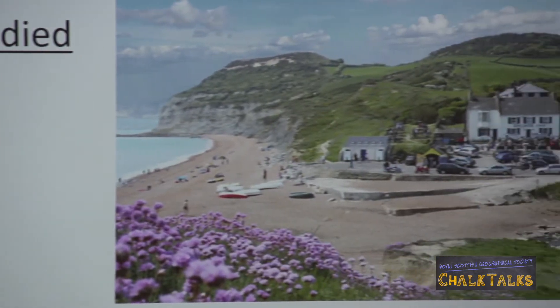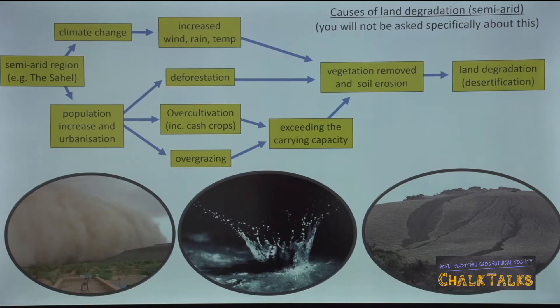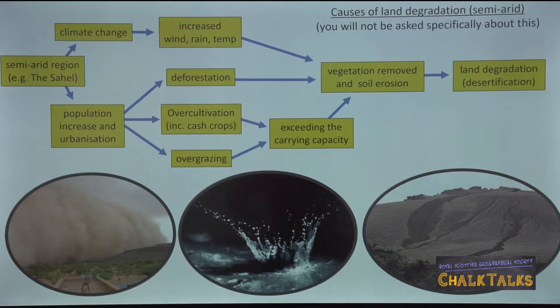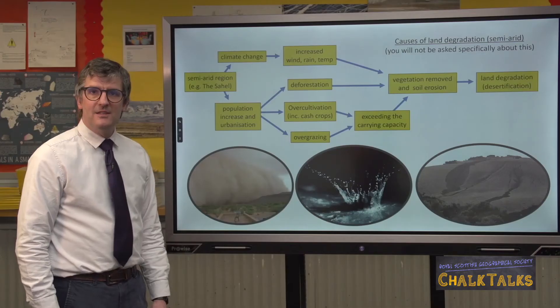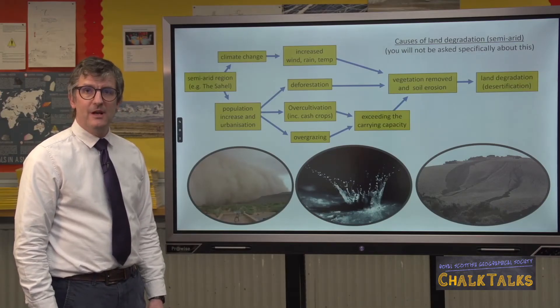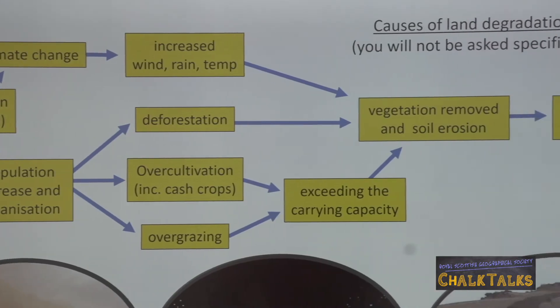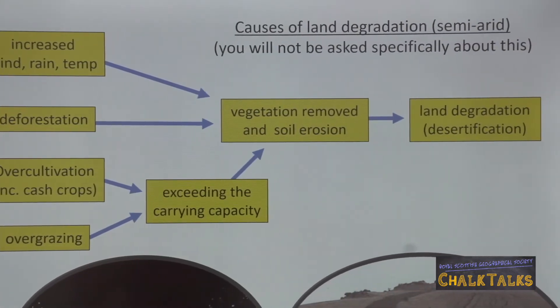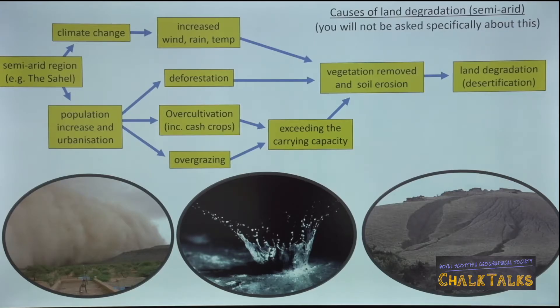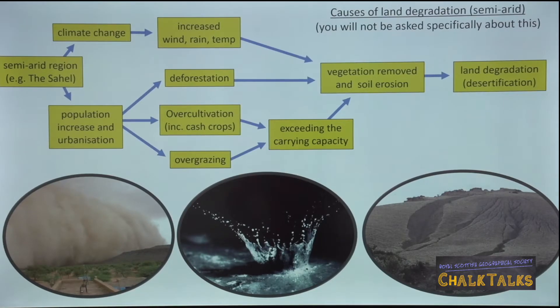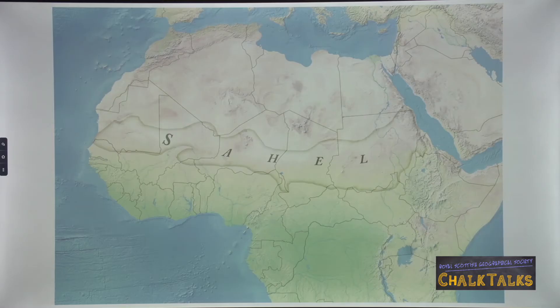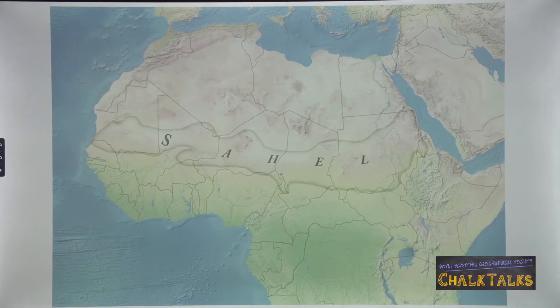You only need to know about conflicts in one type of landscape. Even if you have studied other options, this video will give you an idea about how much detail you need to go into to score high marks. We are going to start with some background information on the causes of land degradation. You won't be asked about this directly in your exam, but it will help you to understand the impacts and solutions that we will study later. Land degradation means a loss in quality of the land surface, and you must include reference to a named area you have studied.